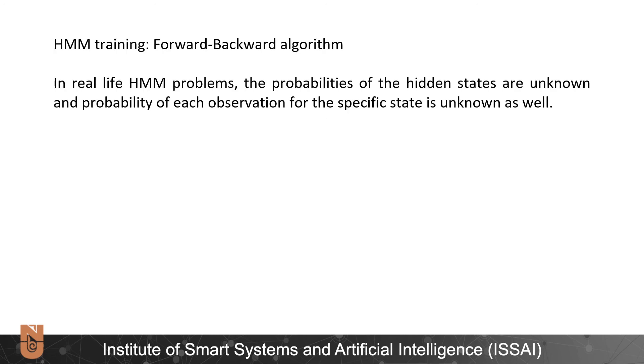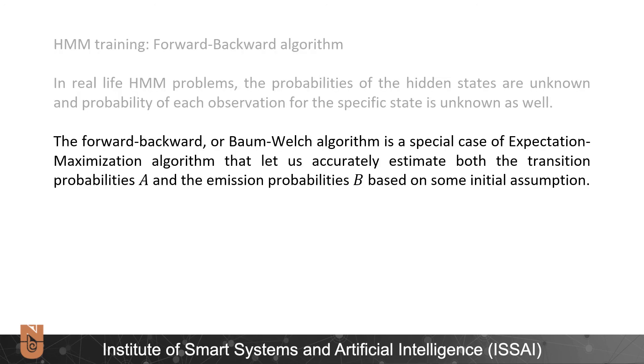In real life HMM problems the probabilities of the hidden states are unknown and probability of each observation for specific state is unknown as well. The forward-backward or Baum-Welch algorithm is a special case of expectation maximization algorithm that let us accurately estimate both the transition probabilities A and emission probabilities B based on some initial assumption. We will cover forward-backward algorithm in more detail in a separate video.